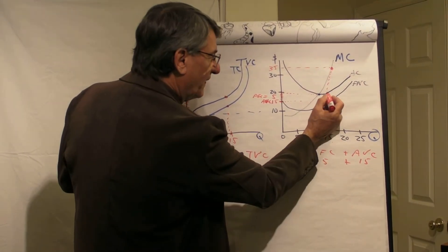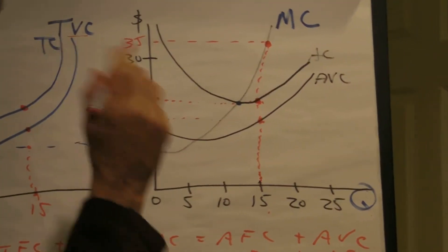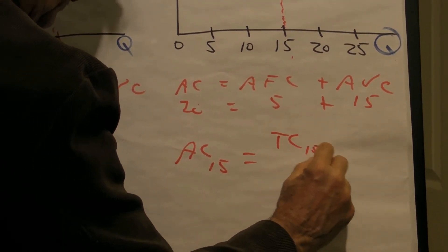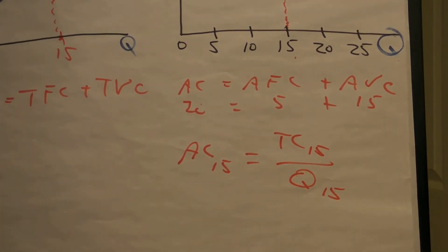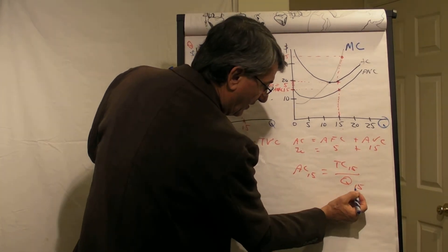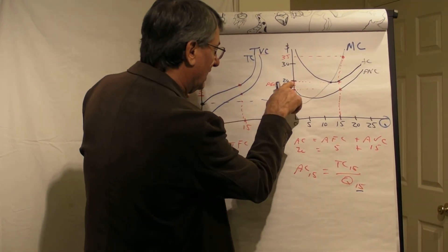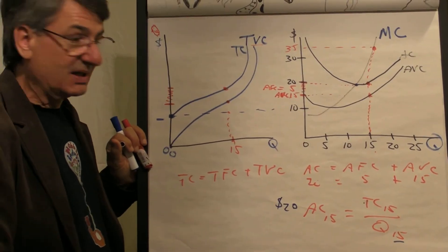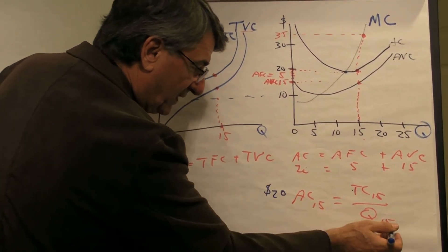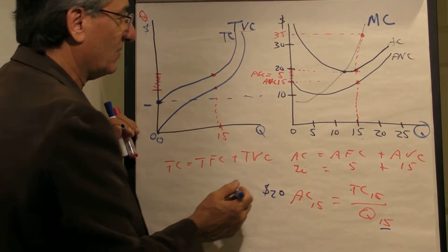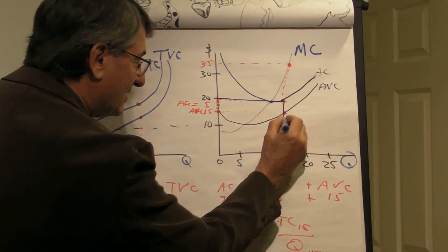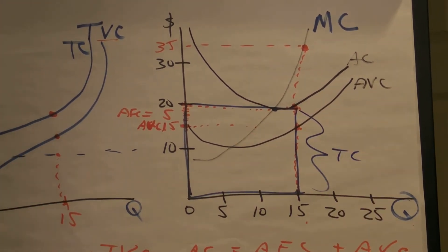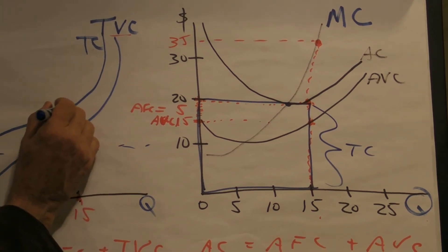Now, if you produce fifteen units and each of these units is costing you twenty dollars on average, the average cost of producing fifteen units is total cost of producing fifteen divided by the quantity, which you know to be fifteen. You have two of these numbers: the quantity is fifteen, the average cost of producing each of the fifteen units is twenty dollars. So total cost is fifteen units times twenty dollars — that's three hundred dollars. Now what is the size of this rectangle right here? It's twenty dollars high and fifteen units wide — this represents total cost of three hundred.